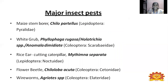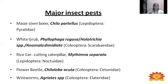The major insect pests of maize in India are: first, the most important pest is stem borer, Chilo partellus, under the order Lepidoptera. Next is white grub, Phylophaga rugosa, under Coleoptera. Next is rice ear cutting caterpillar or armyworm, Mythimna separata, also Lepidoptera. Next is flower beetle or pollen beetle, Chiloba acuta, Coleoptera. And wireworm, Agriotes species, also a beetle under Coleoptera order. These are all the major insect pests causing damage and yield reduction in maize.